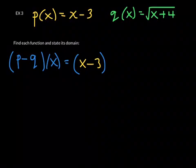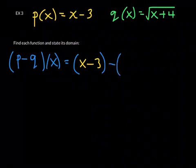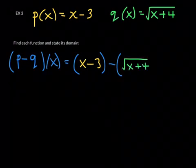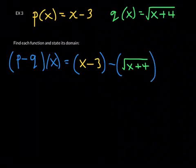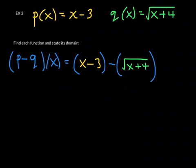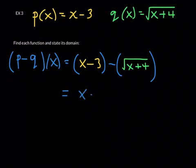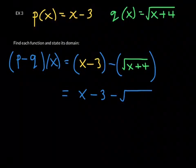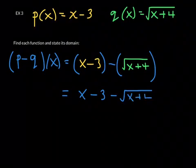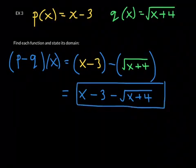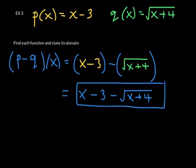So there's p. I am going to subtract from it function q, which is sqrt(x + 4). So that's what p - q at x looks like. Now you can see, hopefully, that there's no way to simplify this any further. So I'm just going to clean it up a little bit, get rid of these parentheses. We don't need them. And just box it. So there's the function. I know it may not look pretty, but it is what it is. It's x - 3 - sqrt(x + 4).